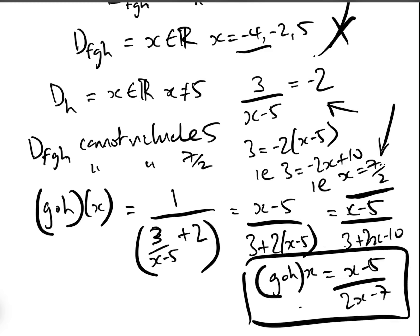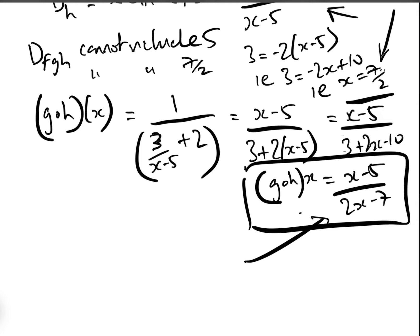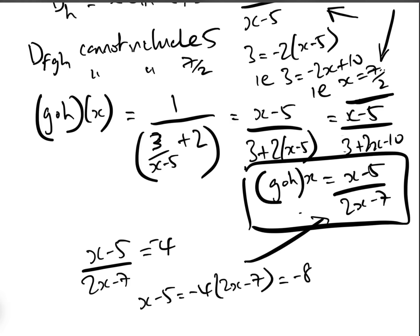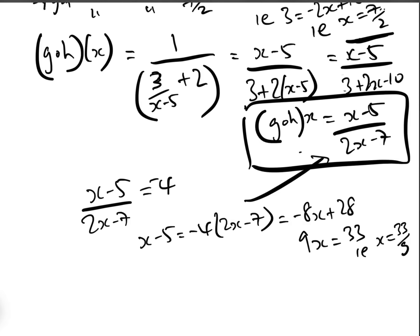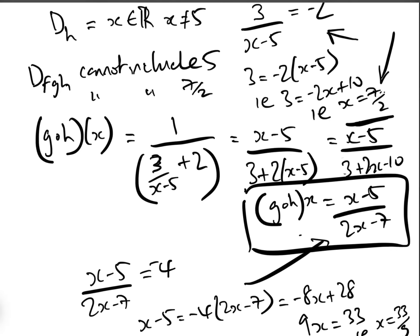That is the function going into f. The composite function cannot equal minus four when input into f, so (x minus five) over (two x minus seven) cannot equal minus four. Solving: x minus five equals minus four times (two x minus seven), which gives minus eight x plus 28, so nine x equals 33, i.e. x equals 33 over nine, which is eleven over three. So x also cannot equal eleven over three.